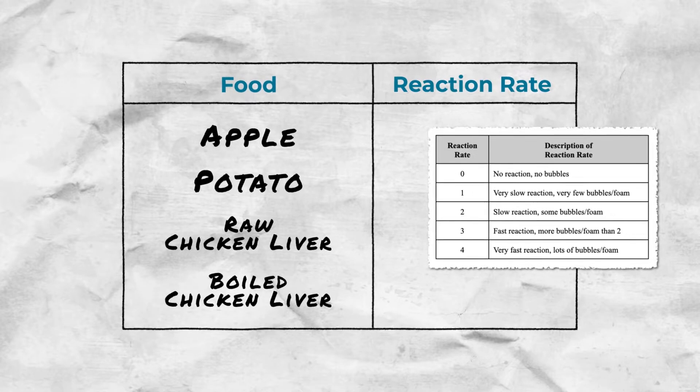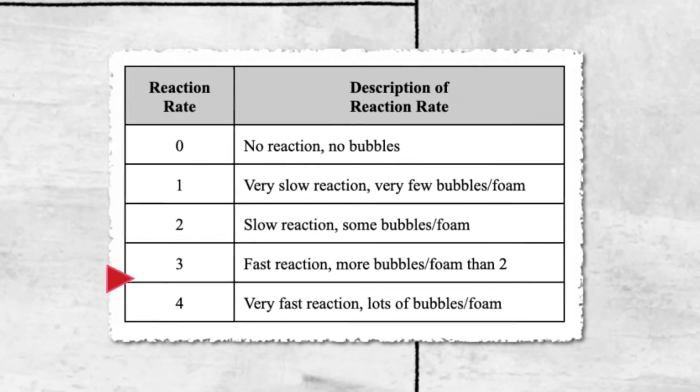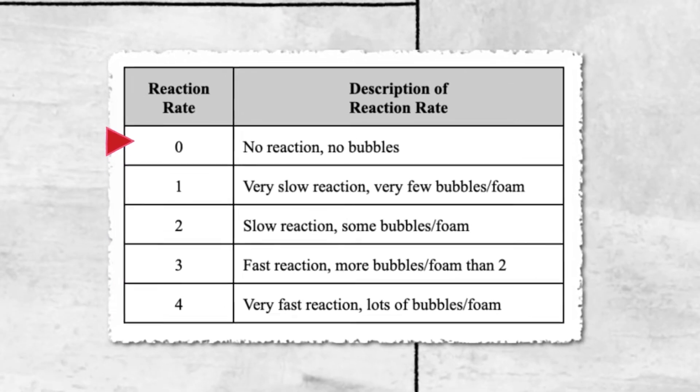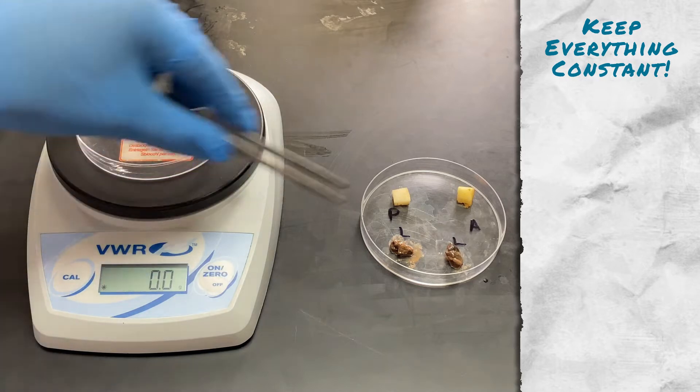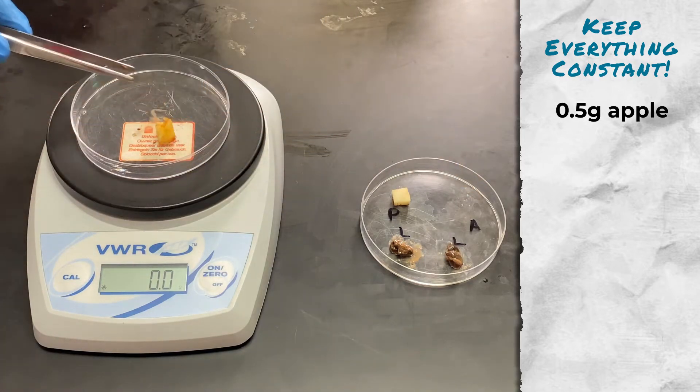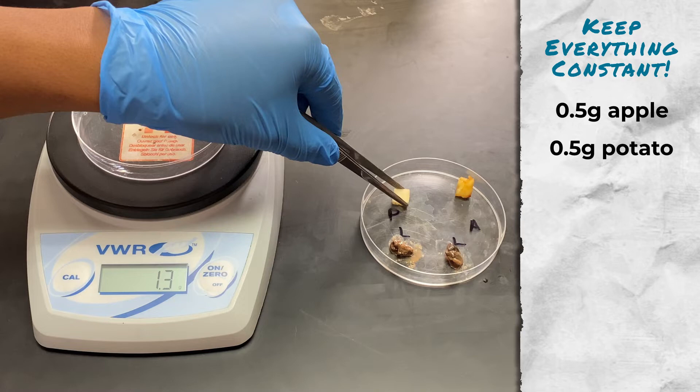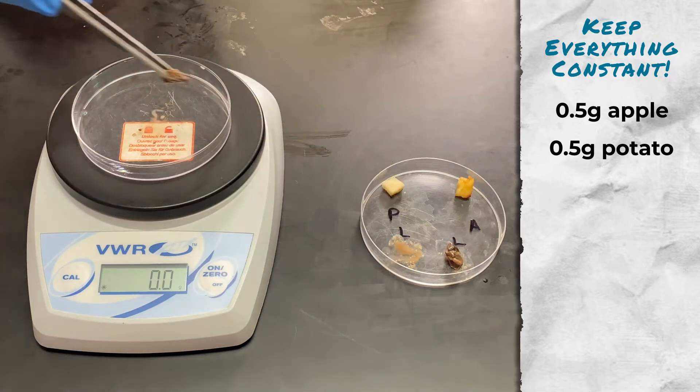We will see which foods contain the most catalase and will break down the peroxide the fastest. We're using 0.5 grams of an apple, 0.5 grams of a potato, and two pieces of liver that each weigh 0.5 grams.